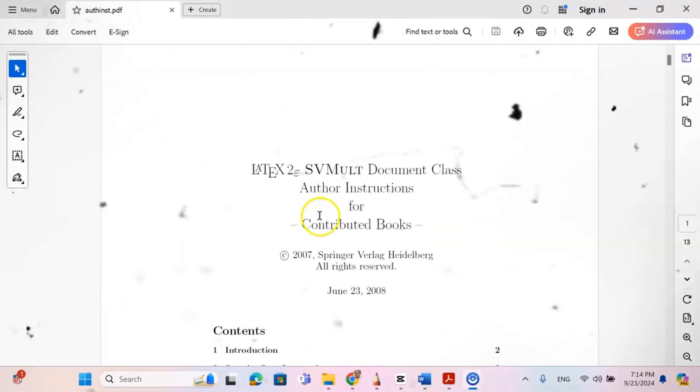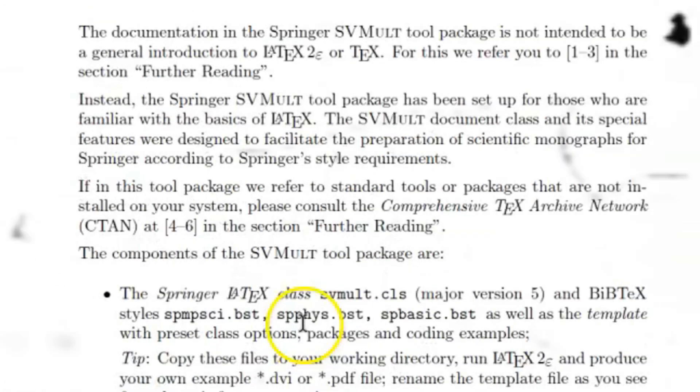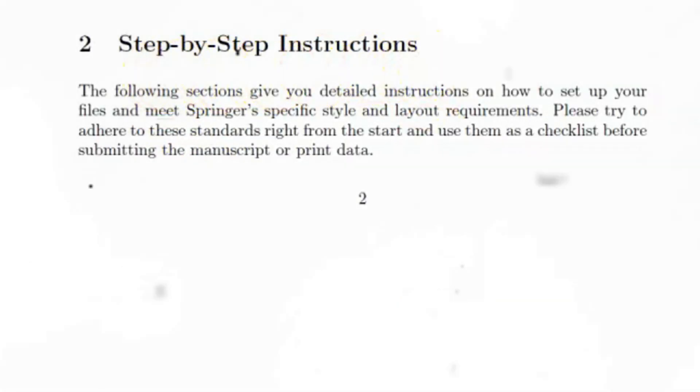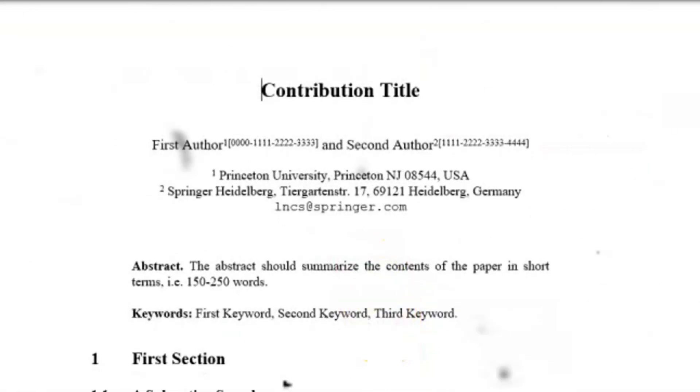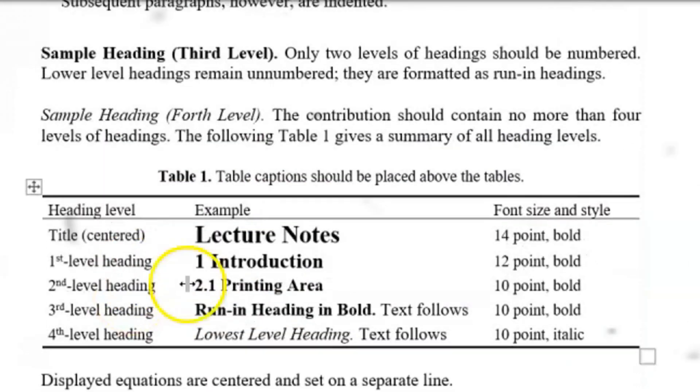We never focus on the author guidelines. Every journal — whether it is Elsevier, Springer, Taylor and Francis, Sage, Inderscience, World Scientific, no matter which publication house — has author guidelines. If you do not follow the author guidelines properly and do not design your manuscript according to them, it will be desk rejected immediately. We always focus on language, methodology, and other aspects, but formatting your research article is immensely important in order to get past the desk rejection and achieve desk editorial acceptance.